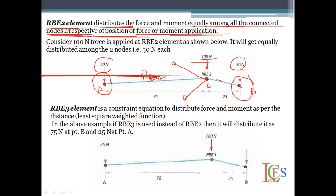RB2 elements distribute the force and the movements equally without considering length or position. Now, in RB3 elements, there is a constraint equation to distribute the force and movement. RB3 considers the distance — it will transfer the loads and movements with respect to the distance.